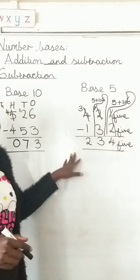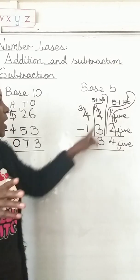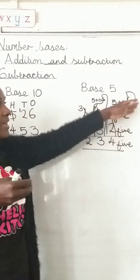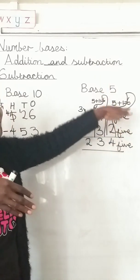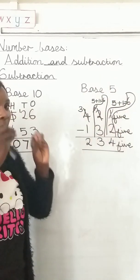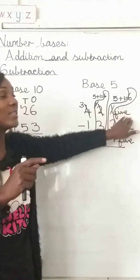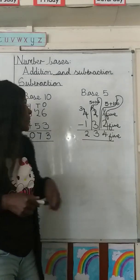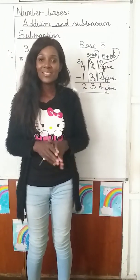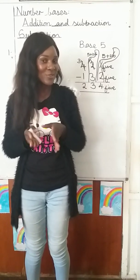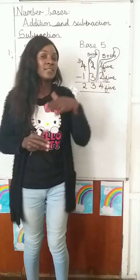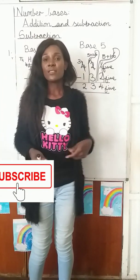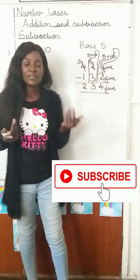This is how you subtract number bases. Whatever you borrow, it equals the base itself — if it's base 6, you add 6; if it's base 9, you add 9. Always take note of the base, because that is what gives you the correct answer. Use this same method whether it's base 3, base 4, base 5, or any other base.